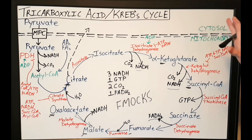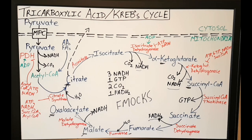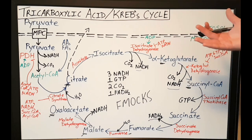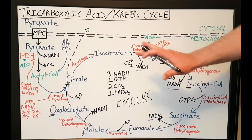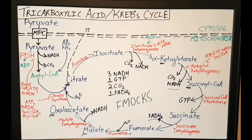The main regulators in the pathway are really just dependent on the energy status of the cell. If the cell is energy deficient, the reaction will push forward. If the cell has a surplus of energy, a surplus of ATP, the reaction will be inhibited. All you really need to know is that ADP and NAD+ positively regulate the pathway, while ATP and NADH inhibit all the regulated enzymes in the pathway.